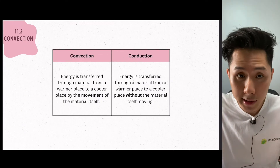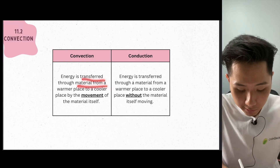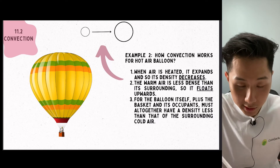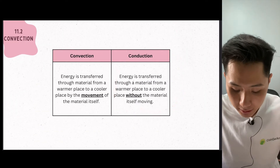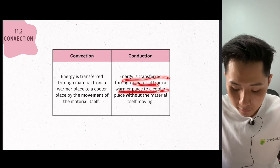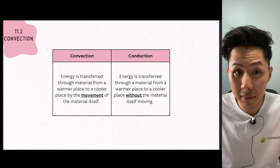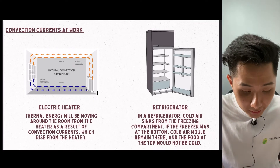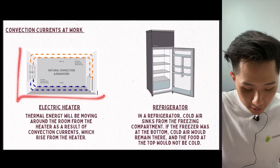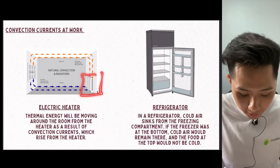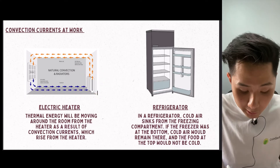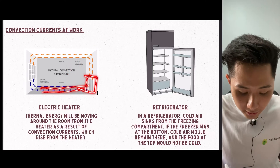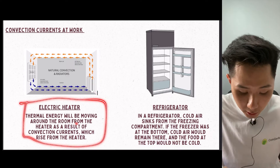Here are some differences between convection and conduction. For conduction, energy is transferred from a warmer place to a cooler place without the material itself moving — conduction only happens when particles vibrate, not when particles move. Here's how convection current can work in different applications. If this is where the heater is located, because hot air will rise and cold air will sink, the heater is usually located at the bottom so that cold air can enter it very easily. That's how electric heaters work.